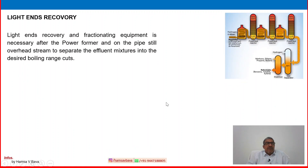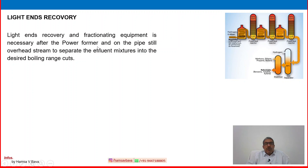Light end recovery is a part of the after-power-forming process. It is usually recovered — that is methane, ethane, and butane — the light ends. After fractionation, we will separate them. Light end recovery and fractionating equipment is necessary after the power-former and on the pipe still overhead stream, to separate the effluent mixtures into the desired boiling point range cuts.